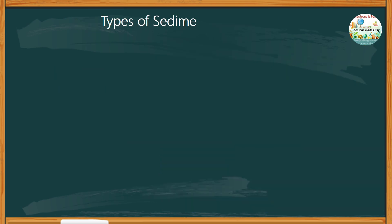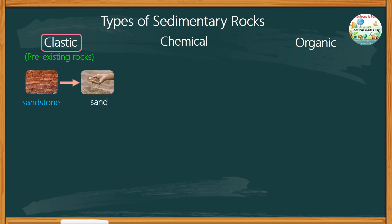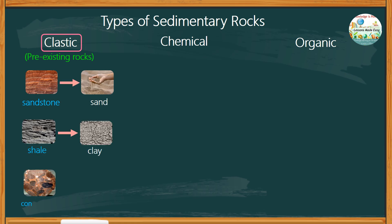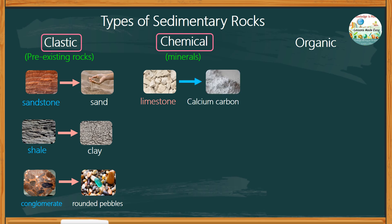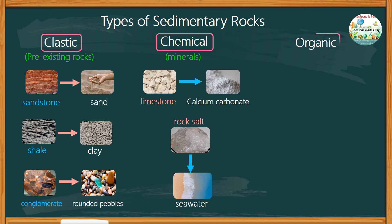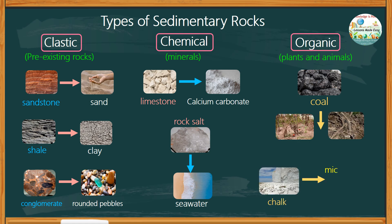There are different types of sedimentary rocks: clastic, chemical, and organic. Clastic sedimentary rocks are formed from fragments of pre-existing rocks — for example, sandstone is formed from sand, shale is formed from clay, and conglomerate is formed from rounded pebbles. Chemical sedimentary rocks are formed from minerals that crystallize out of water — for example, limestone is formed from dissolved calcium carbonate, and rock salt is formed from evaporated sea water. Organic sedimentary rocks are formed from the remains of plants and animals — for example, coal is formed from dead plants and animals, and chalk is formed from microscopic marine organisms.